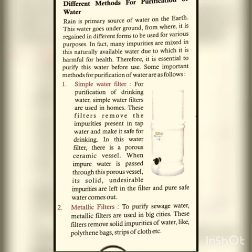First: simple water filter. For purification of drinking water, some water filters are used at home. These filters remove the impurities present in tap water and make it safe for drinking. In this water filter there is a porous ceramic vessel; when impure water is passed through these porous vessels, its solid undesirable impurities are left in the filter and pure water comes out. हमारे घर में water filter use होते हैं — उसमें ceramic vessels होते हैं जो impurities को absorb कर लेते हैं और हमें purified water देते हैं।